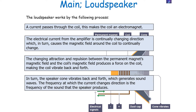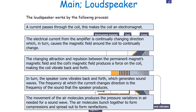As a result, the coil vibrates backwards and forwards. The speaker cone therefore also vibrates backwards and forwards as it is attached to that coil, and this generates a sound wave. The frequency at which the current changes direction in the loudspeaker is the frequency of the sound that the speaker produces. The movement of air particles around the cone produces pressure variations in air, creating compressions and rarefactions that make up the sound wave.